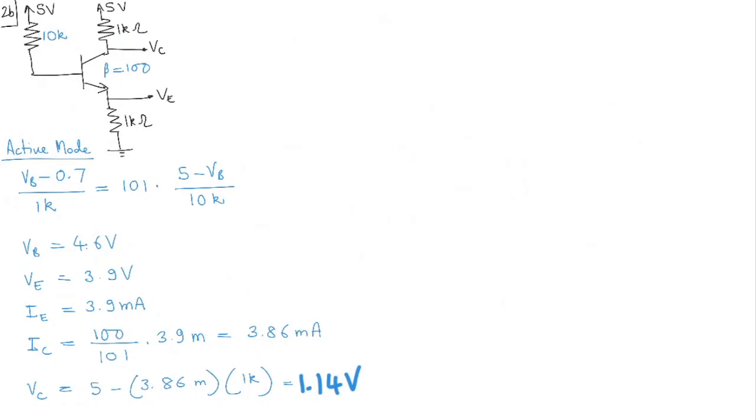Okay, if it's not in active mode, then let's assume saturation mode. So let's assume that this is in saturation mode. Okay, and now we'll have to do the problems again. All right, so what we can do is we can say, okay, what is Ib? We know what Ib is. It's basically Ib is going to be 5 minus Vb divided by 10k.